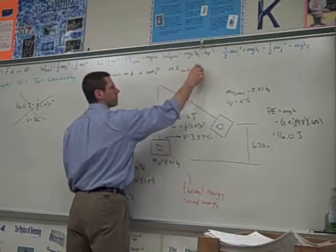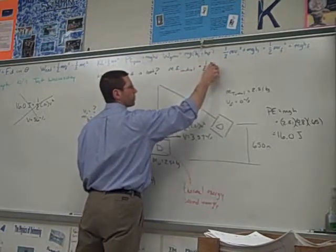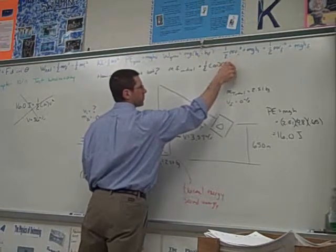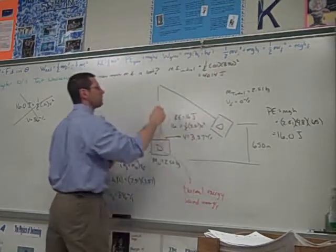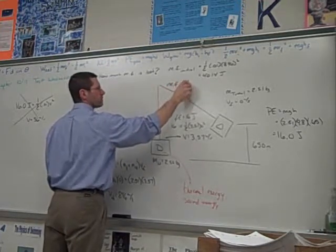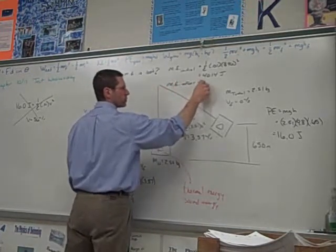So, the initial value was 1.5 times 0.01 times 896 squared. So, 4,014 joules. The mechanical energy after was 16 joules.